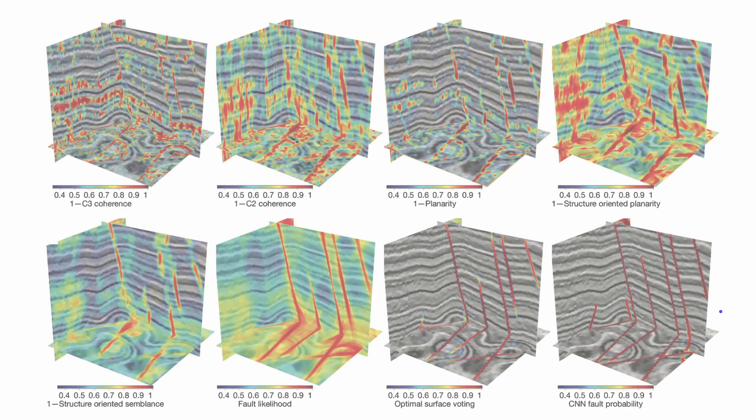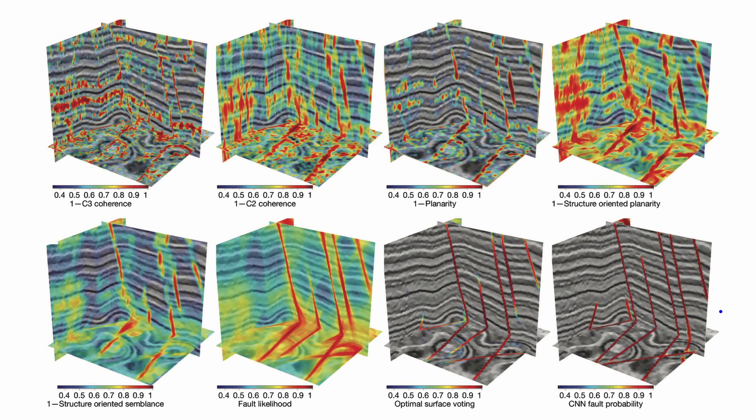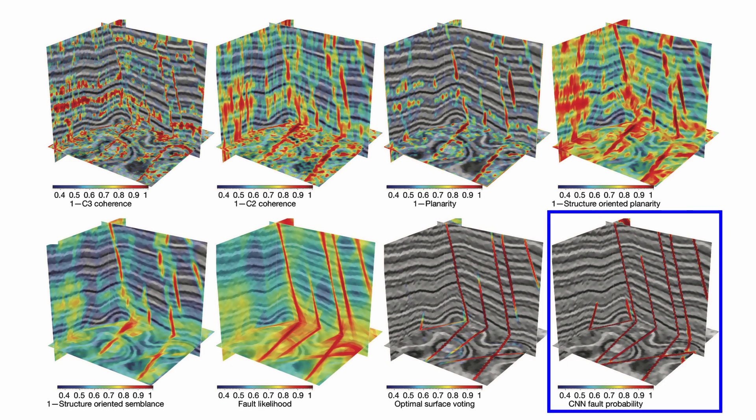For validation purposes, it's essential to take a look at predictions on the validation data set. Neural networks show better ability to highlight faulting structures in the seismic image, while traditional methods struggle with synthetic noise and faulting looks more disjointed than it actually is.